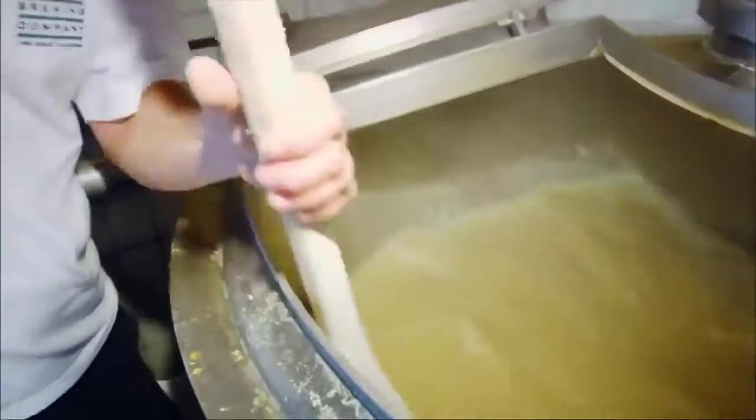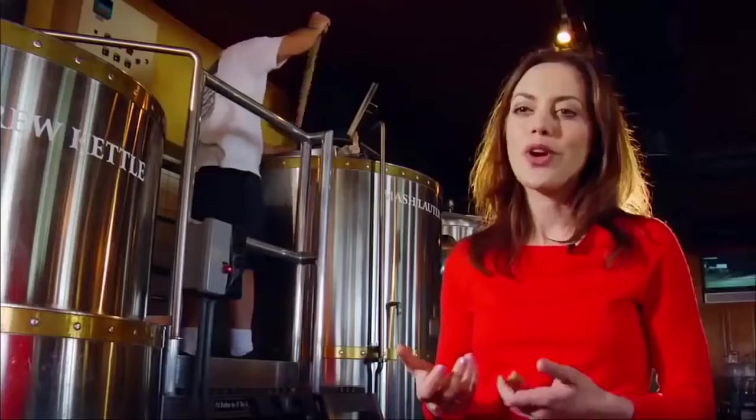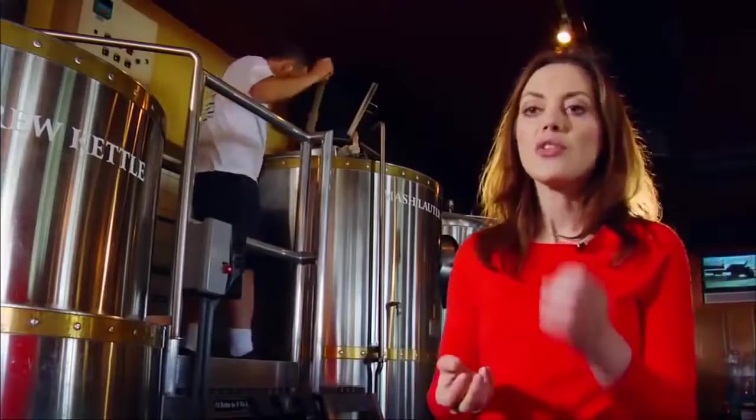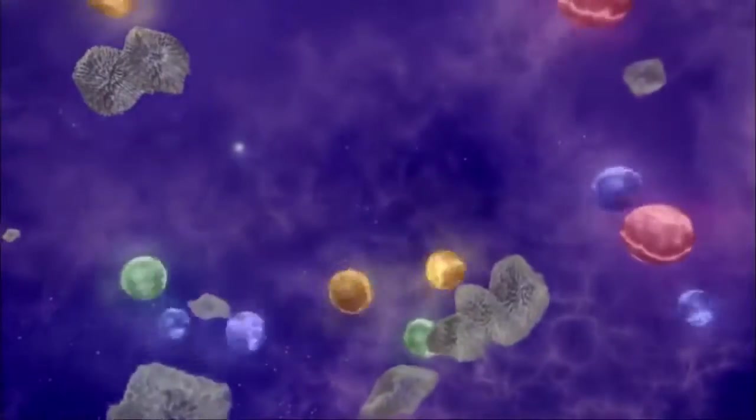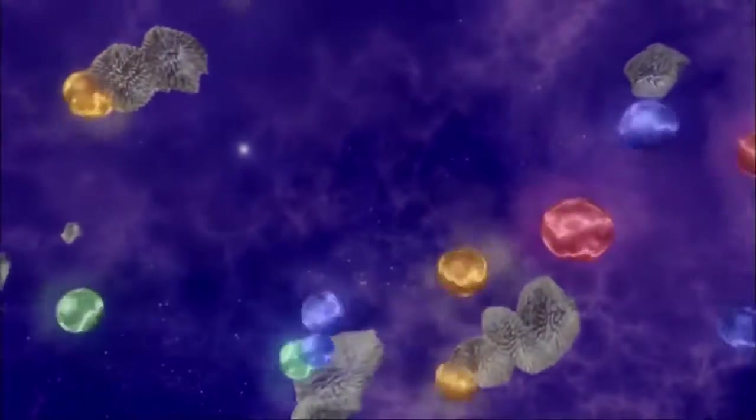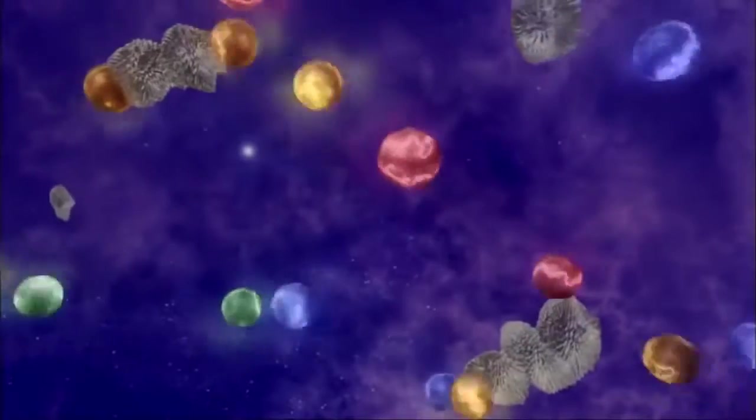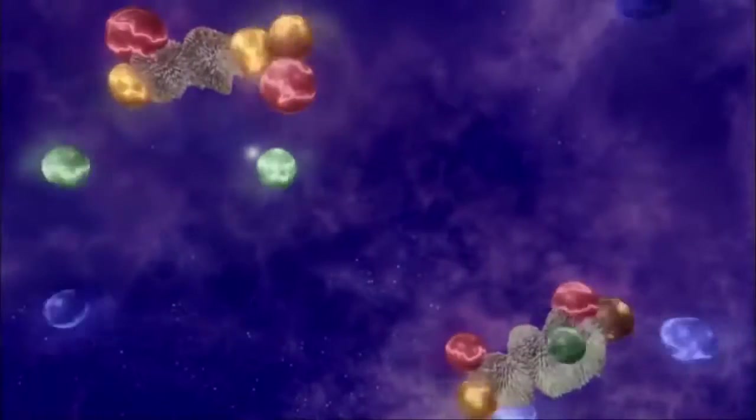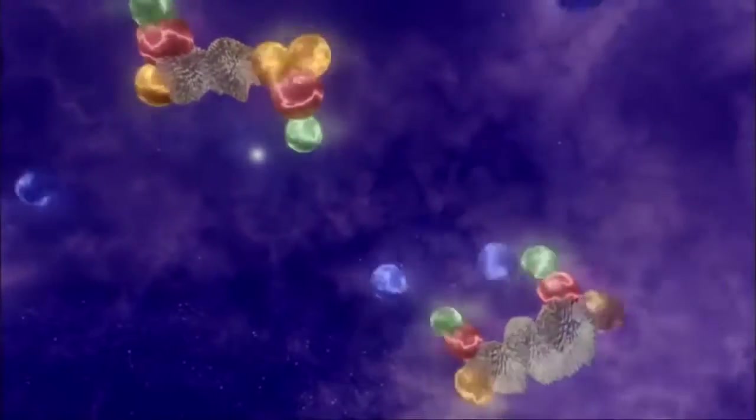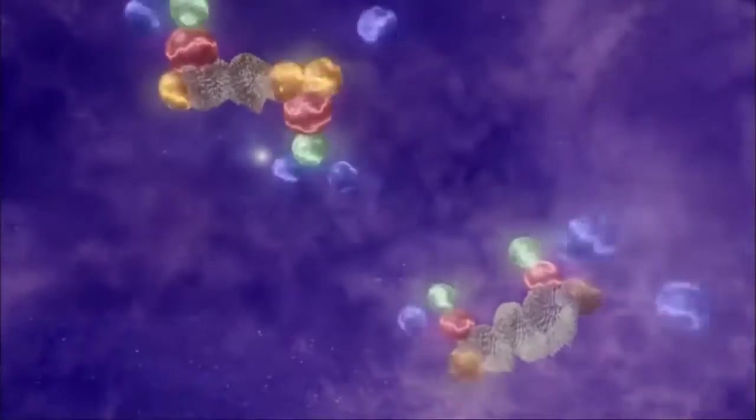In this microbrewery, barley, water and yeast are used to produce alcohol. Whereas in interstellar molecular clouds, it's dust grains that serve as the key nucleation site for simpler molecules like molecular hydrogen, water and carbon dioxide to come together and react chemically to form more complex molecules like ethyl alcohol.